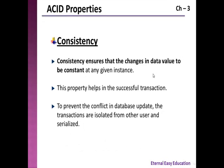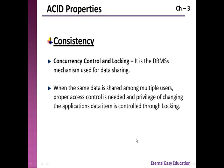Next is consistency. Consistency ensures that changes in data values remain constant. Sometimes there will be concurrent transactions, which is handled through concurrency control and locking. When the same data is shared among multiple users, proper access control is needed, and the privilege of changing data is controlled through locking.